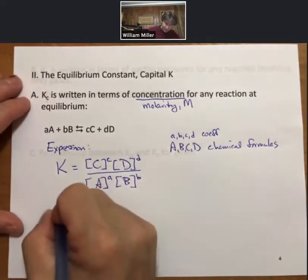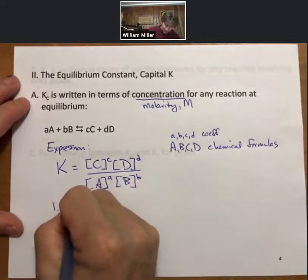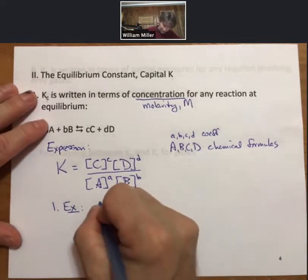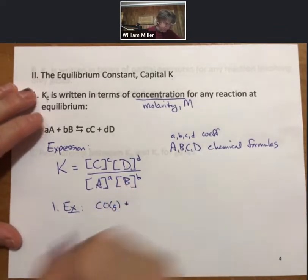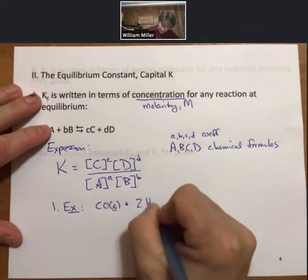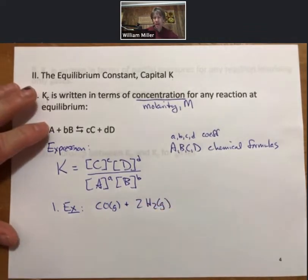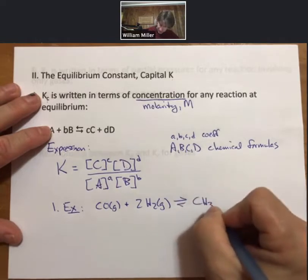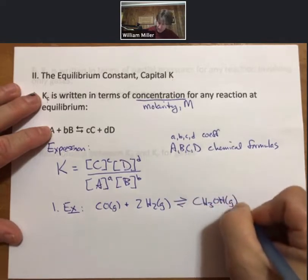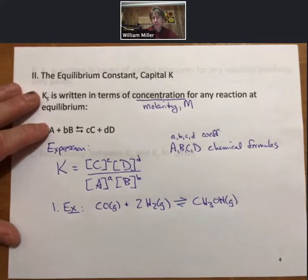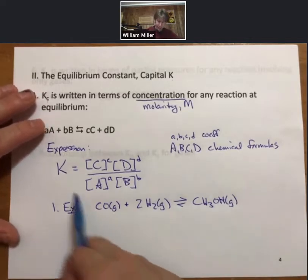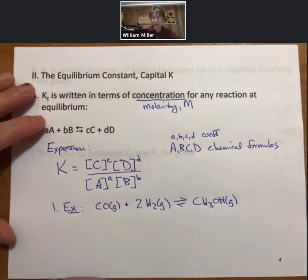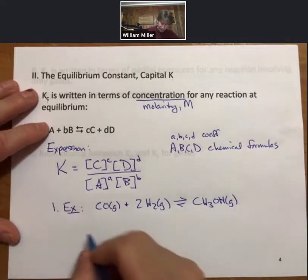And as an example of this, if we take a reaction where carbon monoxide plus two hydrogens goes to methanol, we can write an equilibrium constant, and you can write concentrations for gases. We will write an equilibrium constant, K, as the product.